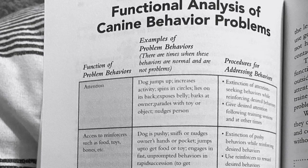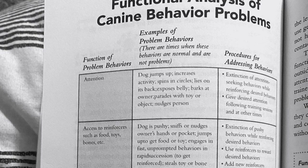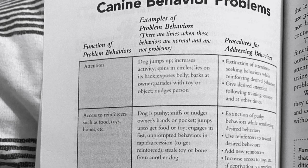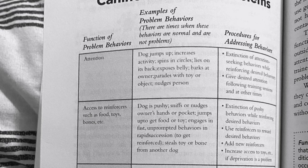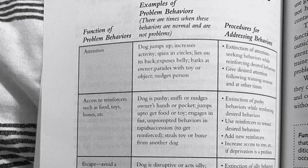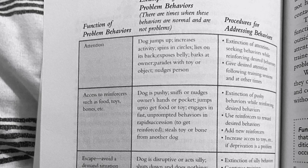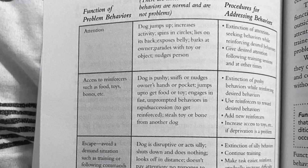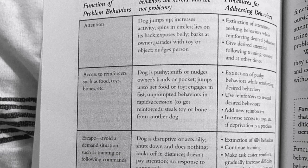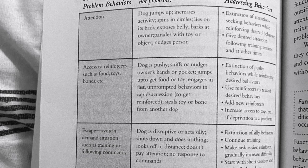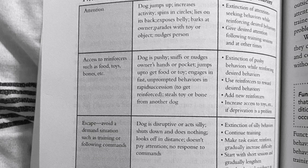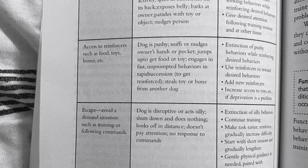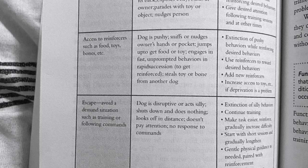Functional analysis of canine behavior problems — attention function: problem behaviors include jumping up, increased activity, spinning in circles, lying on its back, exposing belly, barking at owner, parading with toys or objects, and nudging a person. Procedures include extinction of attention-seeking behaviors while reinforcing desired behaviors, and giving desired attention following training sessions. For access to reinforcers such as food, toys, and bones: dog is pushy, sniffs or nudges owner's hands or pockets, jumps up to get food or toys, engages in rapid unprompted behaviors to get reinforced, or steals toys or bones from another dog. Procedure: extinction of pushy behaviors while reinforcing desired behaviors; add new reinforcers and increase access to toys if deprivation is a problem.